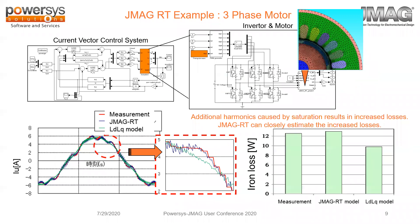Here are a couple of examples to look at. This is a three-phase motor with a current vector control system. You have an inverter and motor module in which the RTD file is dropped in. The results display differences between actual measurement, the JMAG-RT model, and the LDLQ basic model. The additional harmonics caused by saturation result in increased losses — which are captured and closely estimated by JMAG-RT.